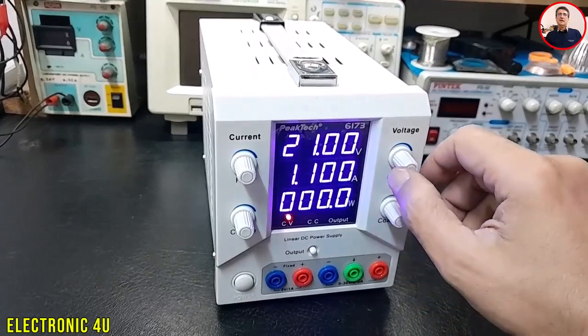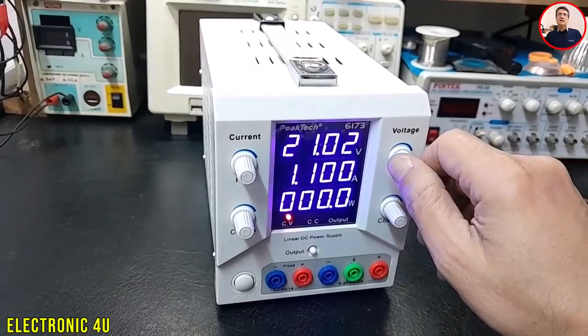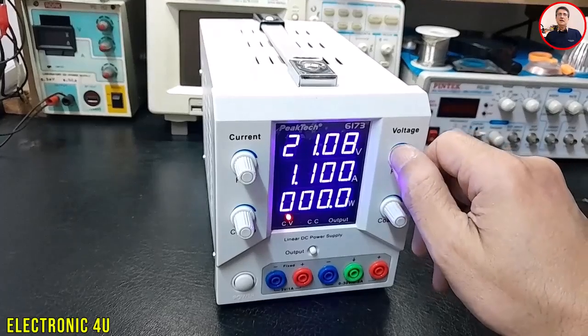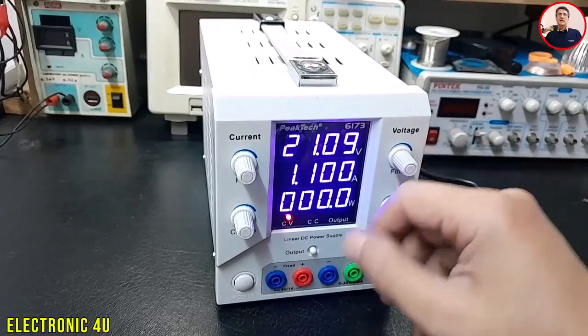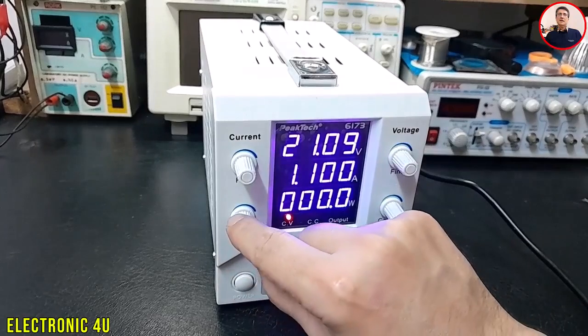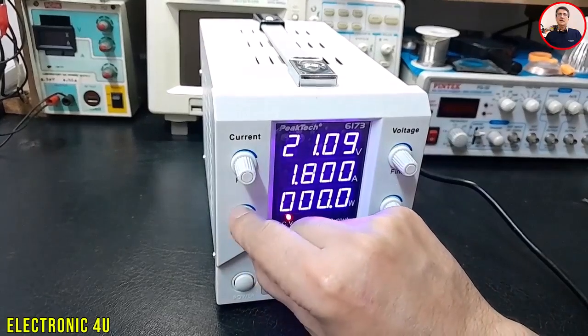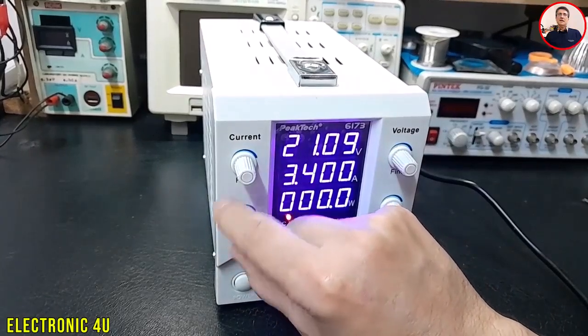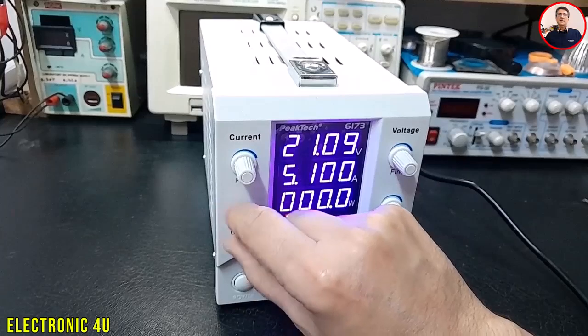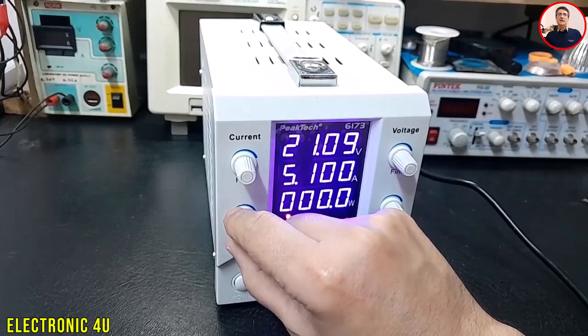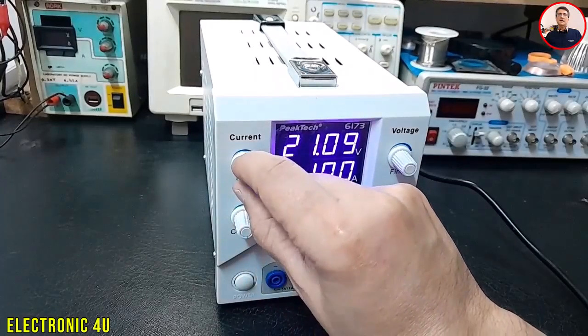The second knob sets the voltage fine adjustment, which is a useful feature. For current, we can increase it up to 5 amps. The current fine knob also adjusts the current precisely.